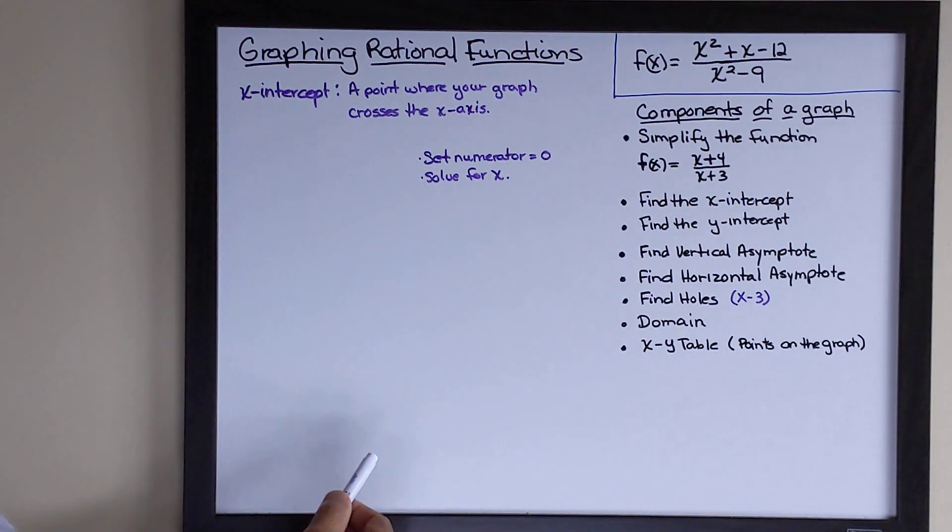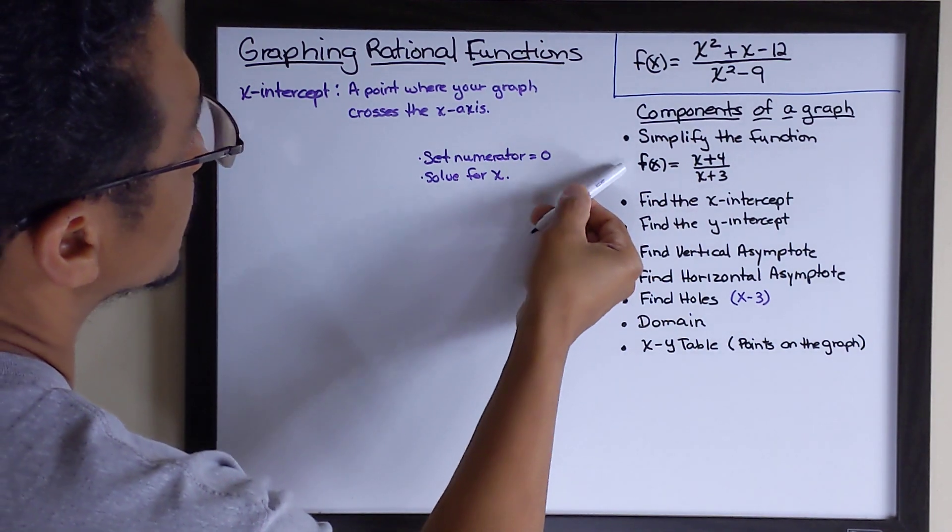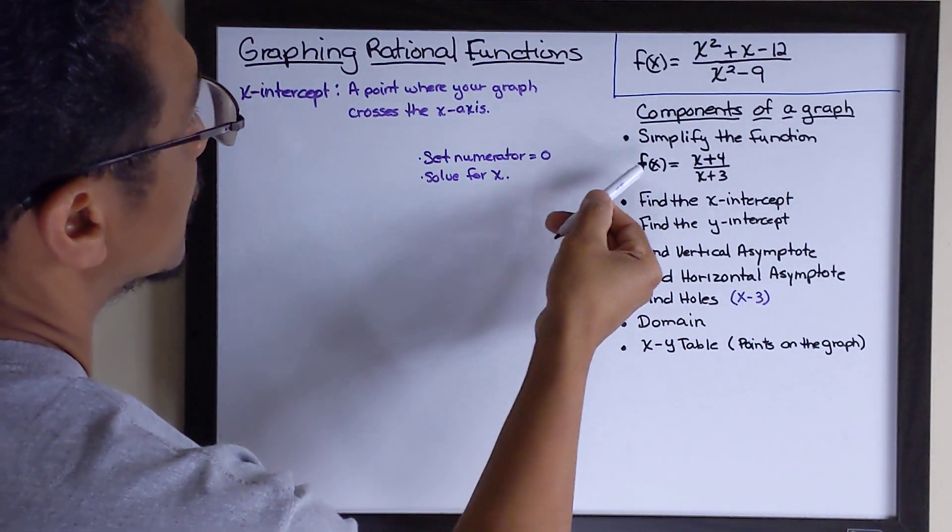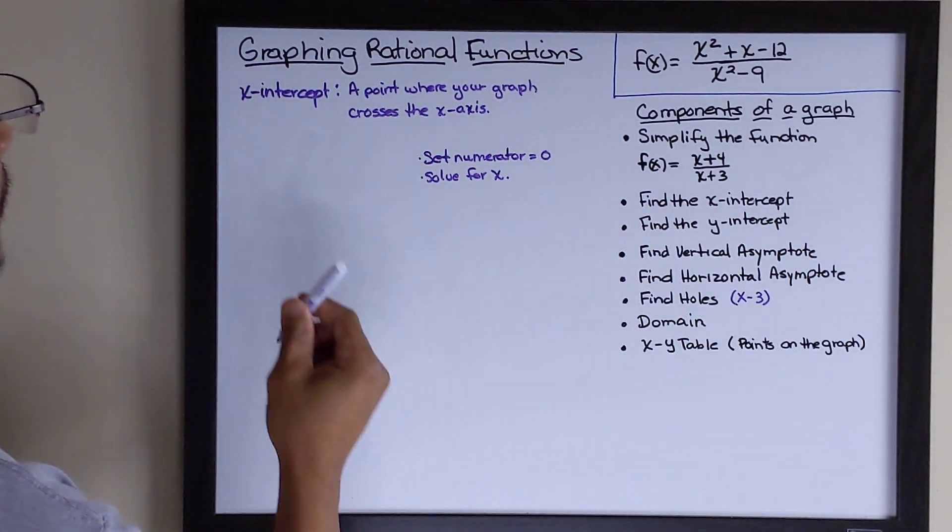Now, the step to do that is very simple. First thing we do is we just set our numerator equal to zero. We're going to use this simplified version of this function that we did in an earlier video. We're going to set this numerator equal to zero.